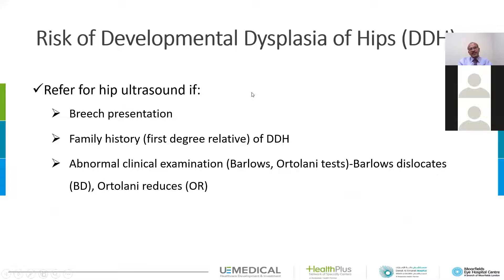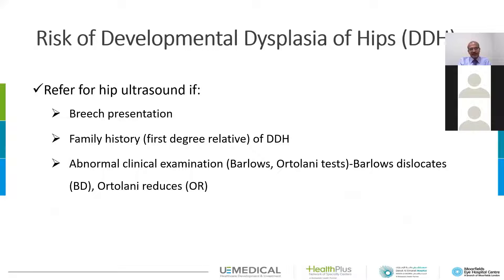Developmental dysplasia of the hip is a very tricky problem because, as the word indicates, it's a developmental problem. Previously we used to call it congenital hip dysplasia or CDH, and that was changed to developmental mainly to clarify that what is present at birth is not necessarily what you get later. The problem need not be fully evolved at birth and may develop into a hip dysplasia even if your initial examination is normal.